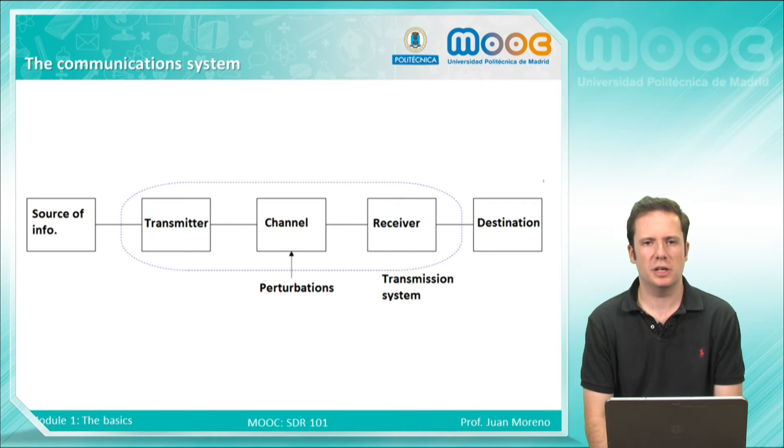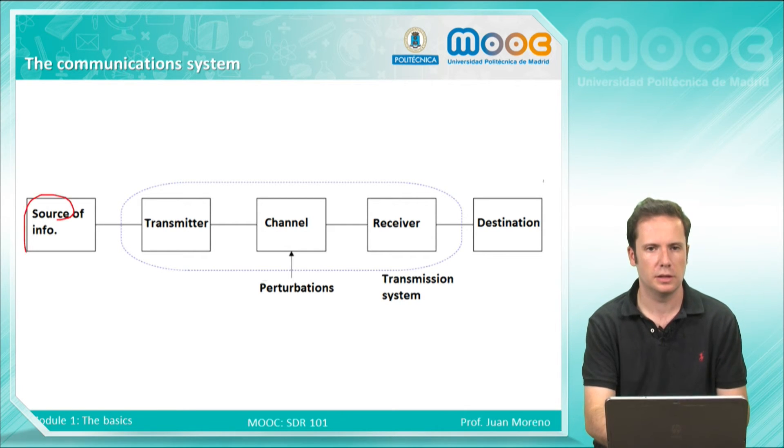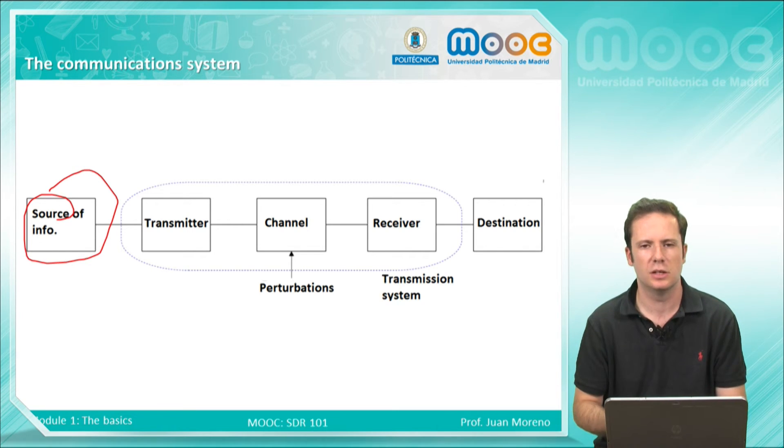This is the communication systems. Here we can see that we have five subsystems or five components. The first one, this one here, it's the source of the information. For example, it could be a person talking, or a file that we want to transmit, or a video or something else.